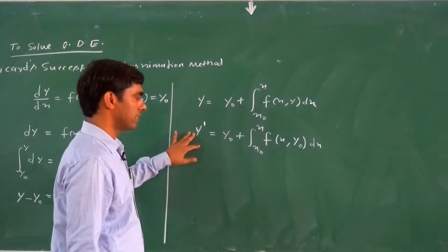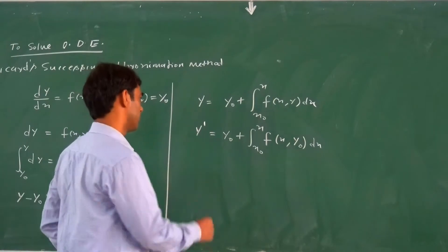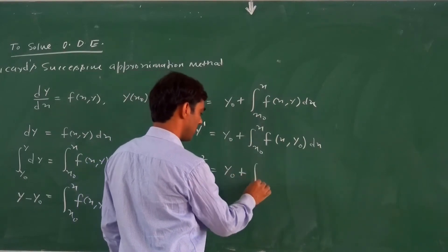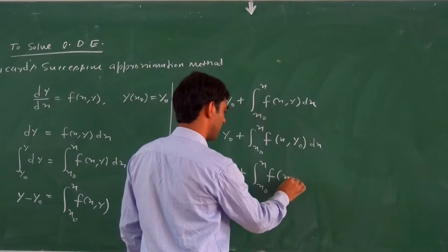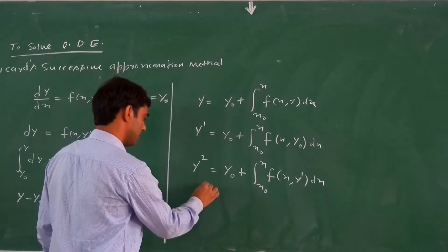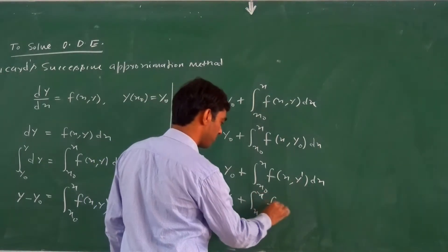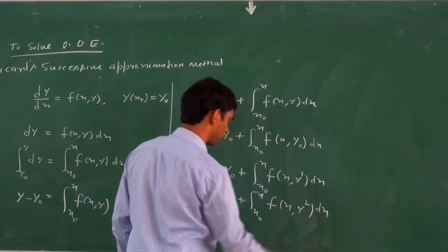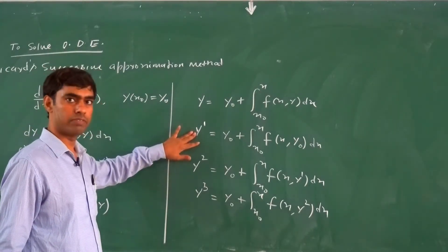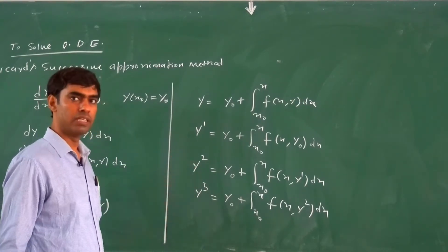At the second step, we replace y₀ by y₁, giving y₂ = y₀ + ∫(x₀ to x) f(x, y₁) dx. Similarly, y₃ = y₀ + ∫(x₀ to x) f(x, y₂) dx. So y₁ is the value after the first approximation, y₂ after the second approximation, and y₃ after the third approximation.